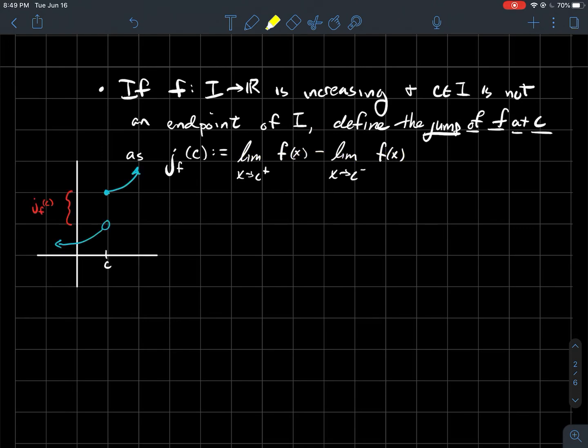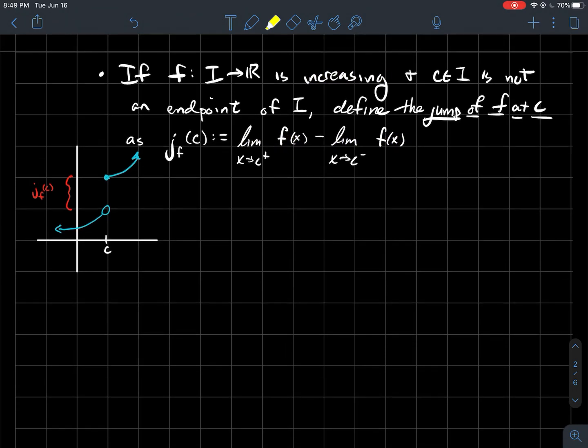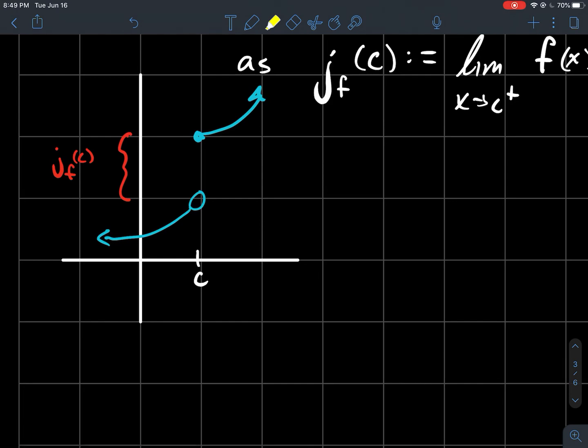And so in a picture here, again, I'm assuming that this thing's increasing. Therefore, this should be positive, right? The right hand limit should be bigger than the left hand limit since my function's increasing. So in general, maybe it looks something like this. So all I'm saying is this vertical distance in red between these, that jump, like it's kind of intuitive to call it a jump, I hope. I'm just saying that that number is what we'll call the jump of f at c.